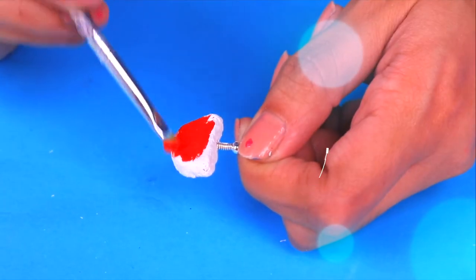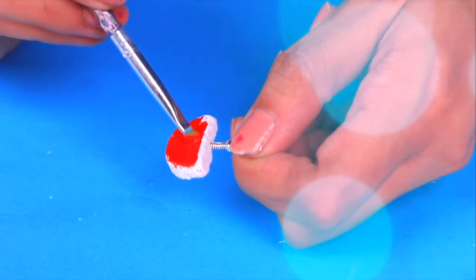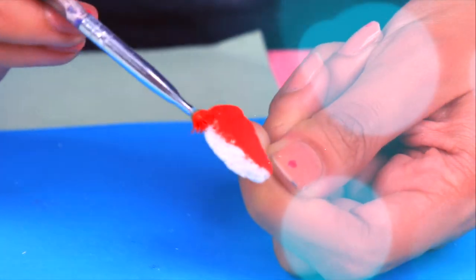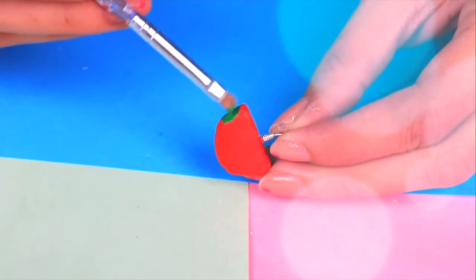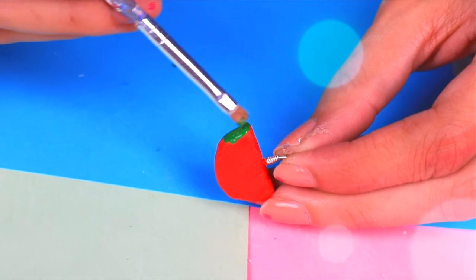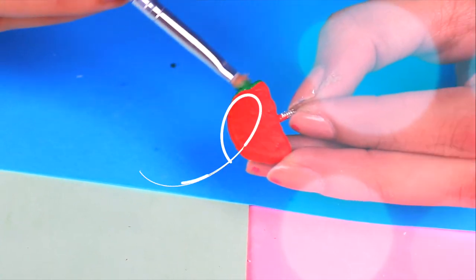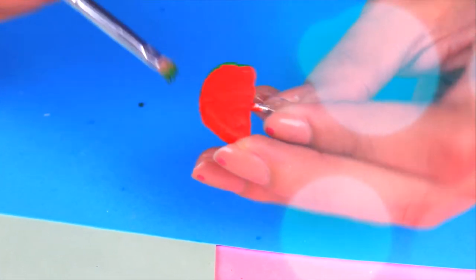First for our food bracelet we will use this paint to make the watermelon. Don't worry the green paint will go after it. Once the paint is dry we will use green to paint the watermelon rind. Trying to be very careful. I recommend you to use a thin brush for this.